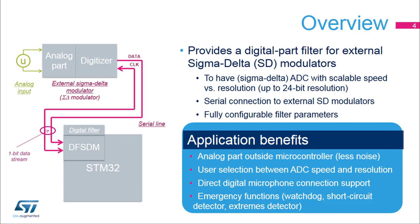The DF-SDM integrated inside STM32 products provides the digital part of the complete sigma-delta ADC with an external analog part, which is the sigma-delta modulator. Both parts are connected through the serial interface, which provides a 1-bit sigma-delta stream. The average value of this stream represents the analog value on input. Applications can benefit from easy connection — just one or two wires are needed. Thanks to the analog being located outside the microcontroller, there is less noise. The balance between speed and resolution can be set by configuring the digital filter.